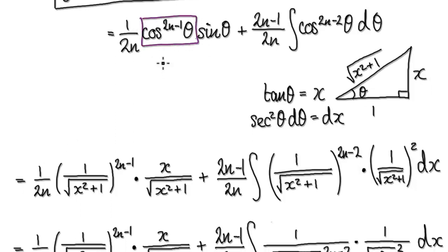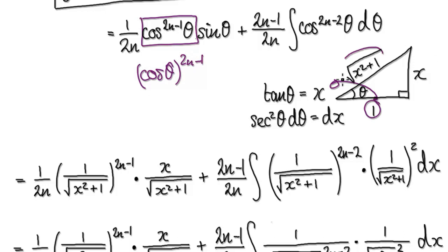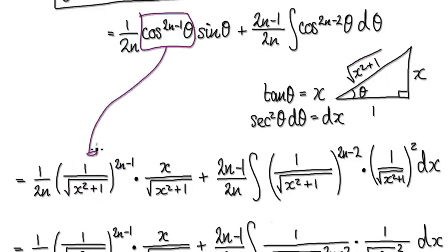Looking at this block, visualize this as cos theta to the power of 2n minus 1. Looking at the diagram, cos would be adjacent over hypotenuse. So cos theta to the power of 2n minus 1 becomes this expression — now everything is in terms of x as opposed to theta.